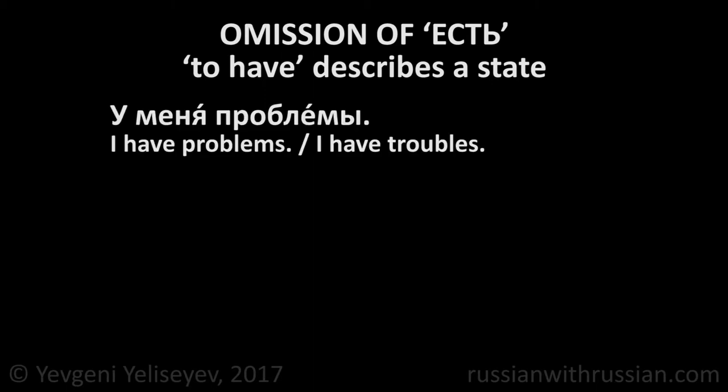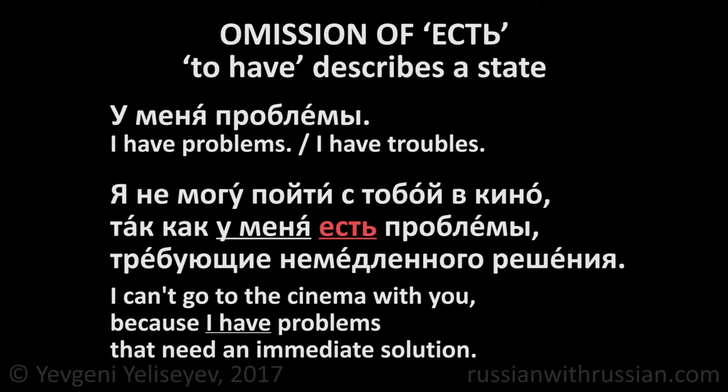Other examples. У меня проблемы — I have problems, I have troubles. Here the verb 'to have' describes my worrying state because of my problems. But: я не могу пойти с тобой в кино, так как у меня есть проблемы, требующие немедленного решения — I can't go to the cinema with you, because I have problems that need an immediate solution. That's why I don't have time.